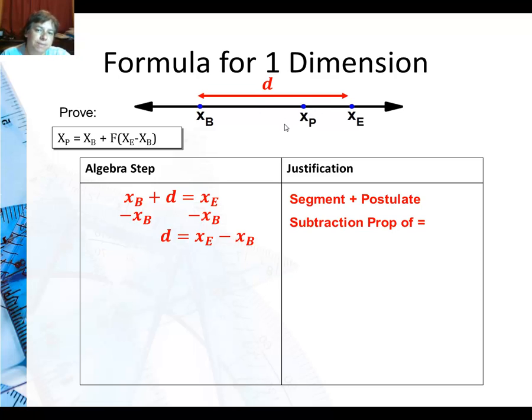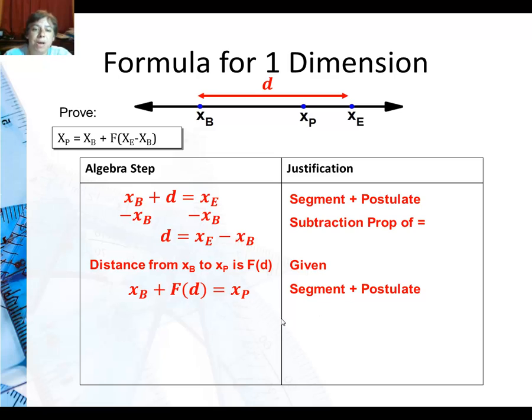But I'm really looking for x of p. So I'm going to kind of do my own segment addition postulate again. But I'm going to use this different distance, the fraction times d. First of all, I'm going to say that's the given. We're setting it up so I'm doing a fraction of this distance. And I'm always starting from x of b, the beginning. So x of b plus my new distance, the fraction times d, equals x of p. That's the segment addition postulate. Then I substitute in x of e minus x of b for distance. And that pretty much gives me the equation that I have up here, except that x of p is in front.